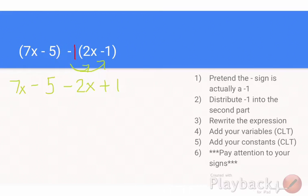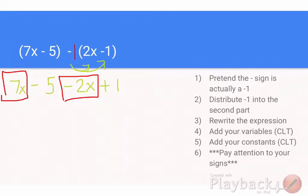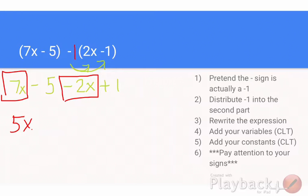Now it says add your variables or combine like terms. I have 7x here and I have a negative 2x. Remember, whatever sign is in front of the term — think of it as being glued to the number. The terms are 7x and negative 2x. So 7x plus negative 2x equals 5x.